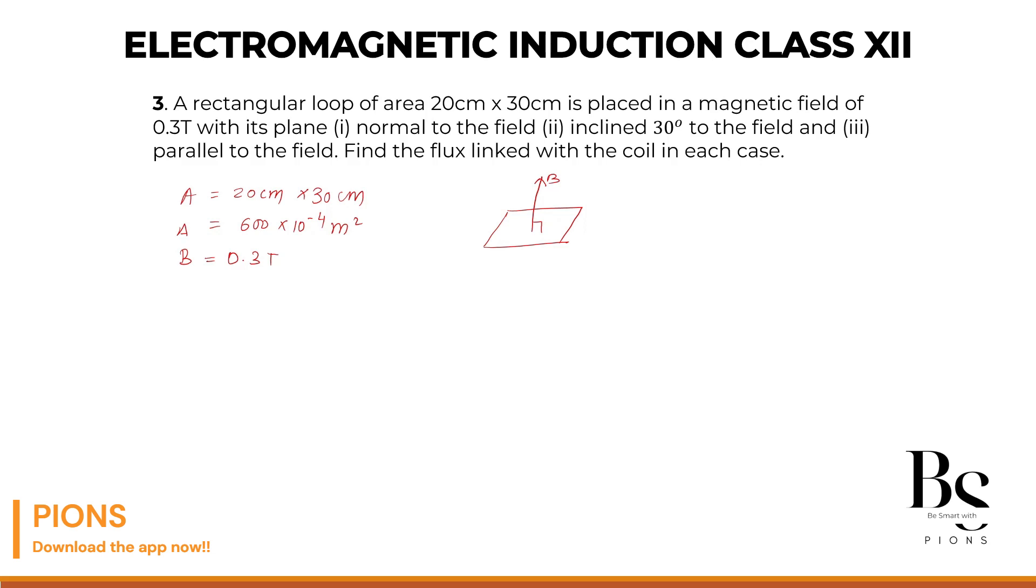And where will be the normal of this plane? So normal will also be perpendicular to this plane. So what is the angle between the magnetic field and the normal? Sir, zero degree. In the first case, theta is zero degree.